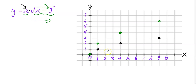So I'm gonna take each green point and move it right three. That's why you wanna use different colors when doing this. I'll take each green point and move it three units to the right, placing it in purple. The points in purple are my final graph.